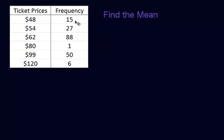Okay, in this problem, what we want to do is find the mean of this frequency distribution. Now the distribution is, I went out, or this is how I made up the distribution. So let's pretend I'm at a concert, and I was curious to see what was the mean price of a ticket. And so I went around and I asked how much did you pay for your tickets? And so I went around and it looked like fifteen people I asked paid forty-eight dollars. Twenty-seven people paid fifty-four dollars. Eighty-eight people paid sixty-two. One person paid eighty, fifty paid ninety-nine, and six people paid one twenty.